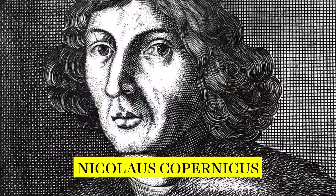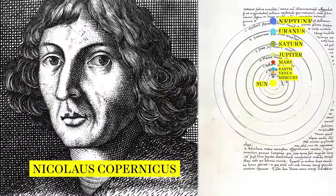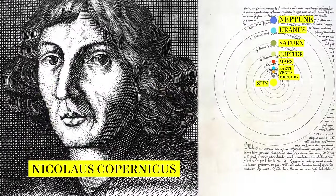Once Copernicus showed that all the planets, including Earth, move around the Sun, then retrograde motion was easily explained as an illusion.